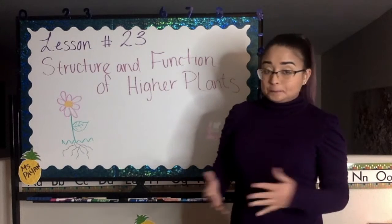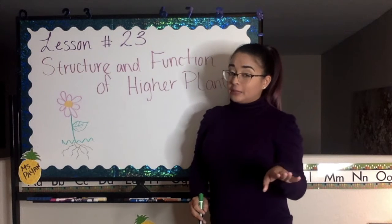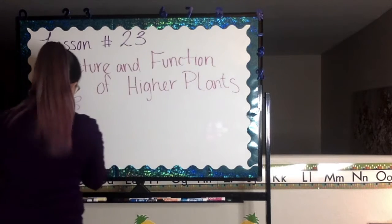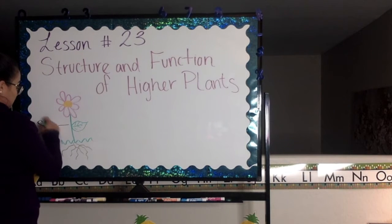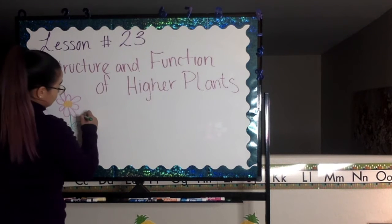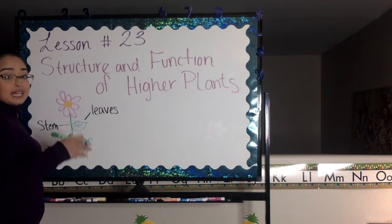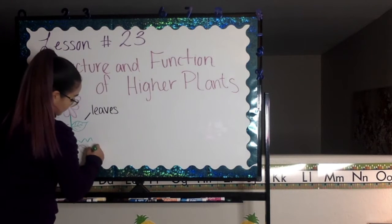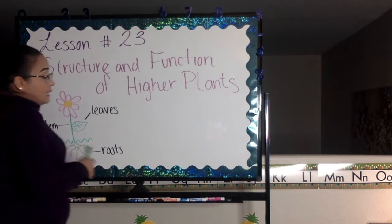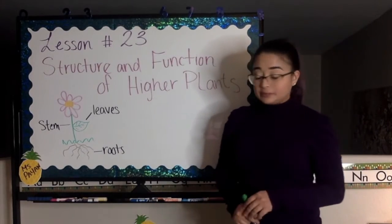Three things. All higher plants must have—it must have a stem, it must have leaves, and it has to have roots. Now for a plant to be considered a higher plant, it has to have all three of those things.